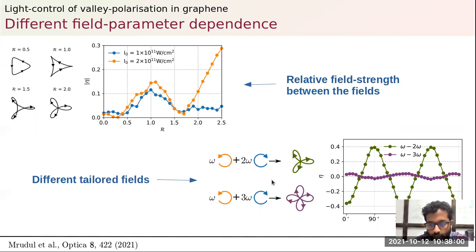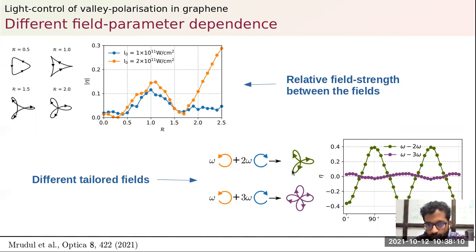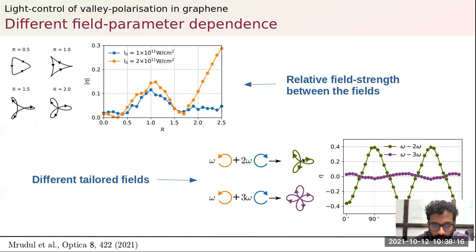We have also tried different tailored fields, like the omega–3omega field, but the valley polarization is greater when you break the inversion symmetry of the system using a field with three-fold symmetry.